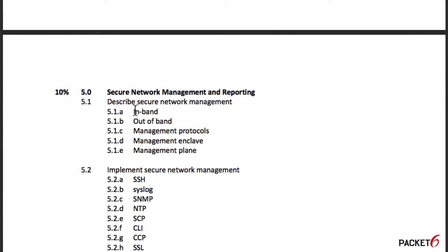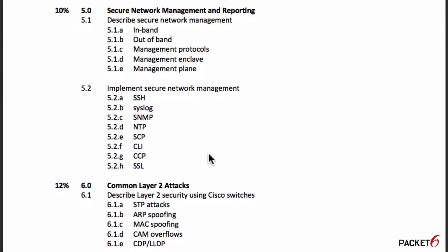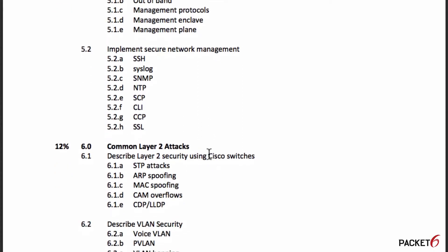Objective 5.0 on secure network management and reporting is 10% of the exam. You need to describe secure network management — in-band and out-of-band management protocols, enclave, and management plane. Then you'll need to implement by configuring SSH, syslog, SNMP, NTP, and SCP using both command line interface and CCP. A common theme throughout is knowing how to both describe and implement using CLI and CCP.